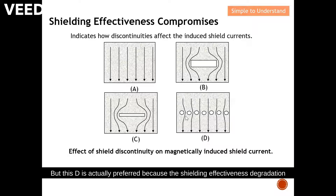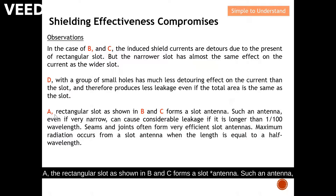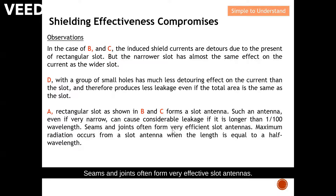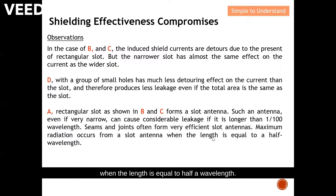Case D is preferred because the shielding effectiveness degradation is not as great — we do not disturb the induced current as much as in case C. A rectangular slot, as shown in B and C, forms a slot antenna. Even if very narrow, it can cause considerable leakage if it is longer than 1/100 of a wavelength. Seams and joints often form very effective slot antennas. Maximum radiation occurs from a slot antenna when the length equals half a wavelength.